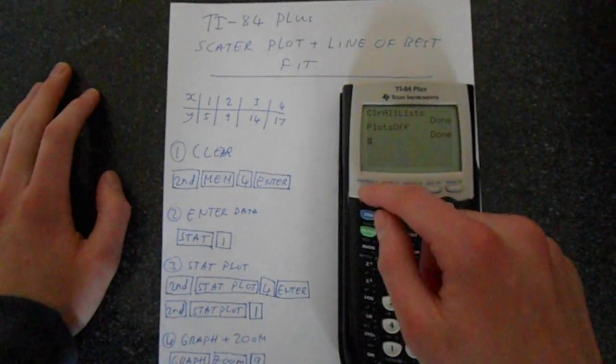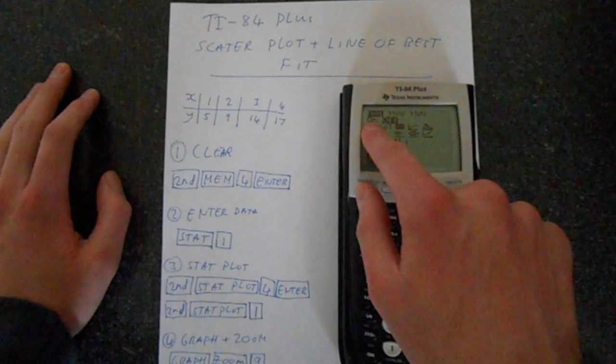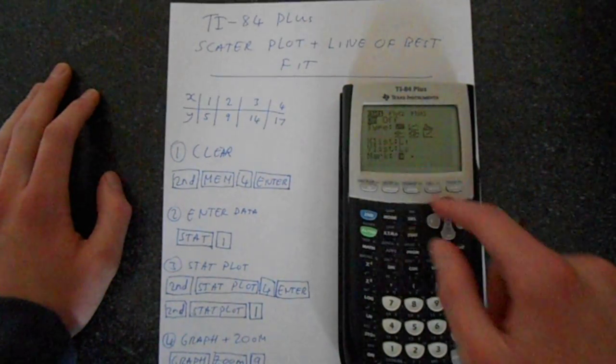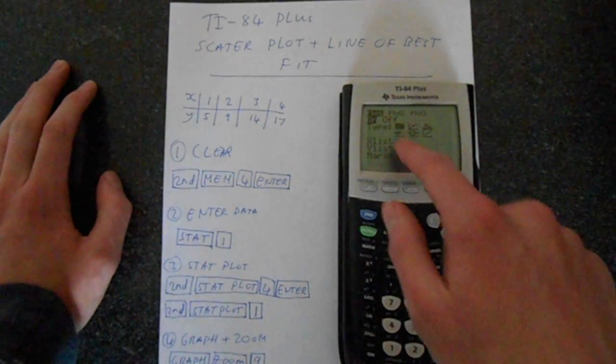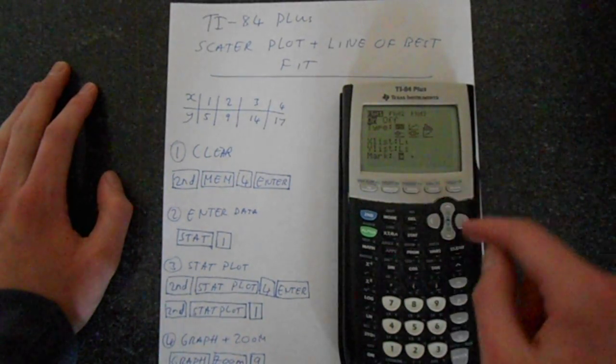And then we go back into that menu, second function, stat plot, then we go to 1. So we want to make this on. So we press enter here and just go through this menu. This is a scatter graph, so we want this one, line graph, bar graph.